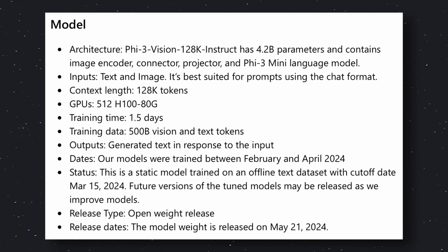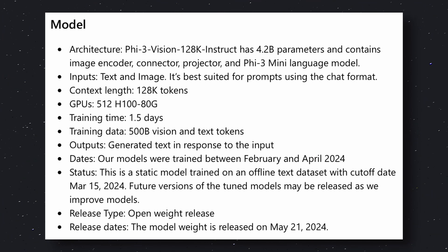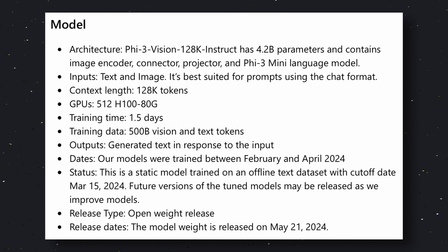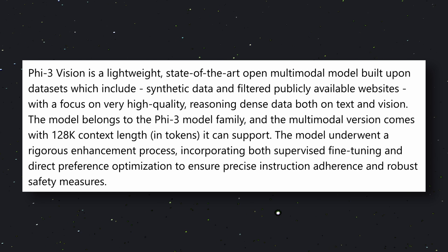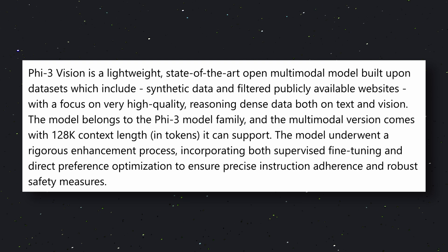Phi-3 Vision is a 4.2 billion parameter model, which means it is very lightweight. It is a multi-modal model, which means you can upload your images, docs, and ask questions about it. The best part about this model is that it supports a 128K context limit, which is amazing for long conversations. As they say, it's a state-of-the-art open multi-modal model built upon datasets that include synthetic data and filtered publicly available websites, with a focus on very high-quality, reasoning-dense data, both on text and vision.